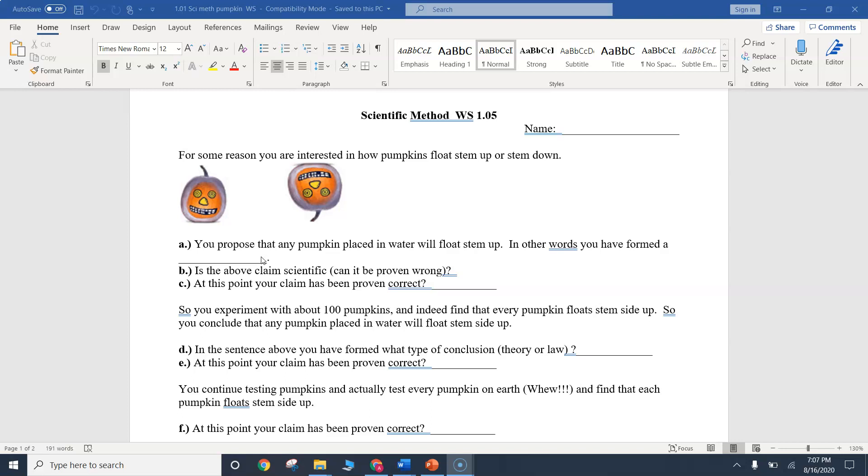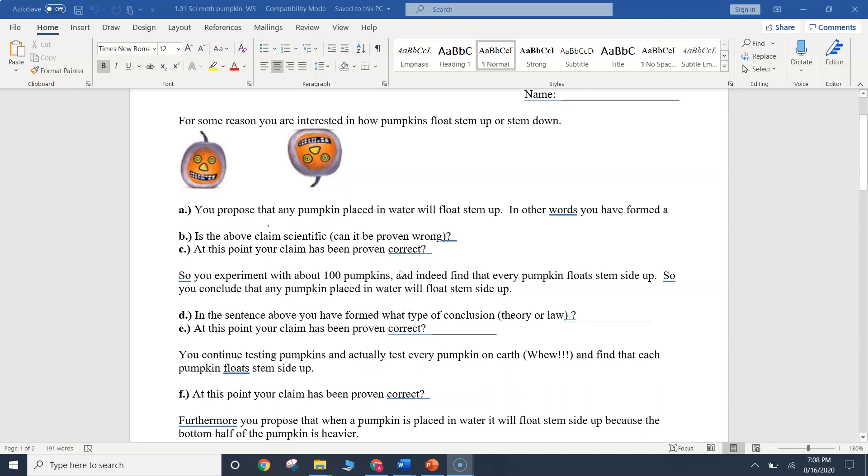So one of our vocabulary words. B is the above claim scientific? Remember that last slide we covered, an object and a claim can only be considered scientific if it can be proven wrong. Would it be possible to prove my idea wrong that any pumpkin will float stem side up? Yeah, all I have to do is put in a pumpkin and have it one float stem side down and it's proven incorrect. So my claim is scientific. B is yes. Has my claim been proven correct? Do I know that any time I put a pumpkin in, it's going to float stem side up? No, I haven't even tested it once. So let's run an experiment. We're going to test 100 pumpkins and we find that every pumpkin that we put in that water floats stem side up. So we form a conclusion that any pumpkin placed in water will float stem side up.